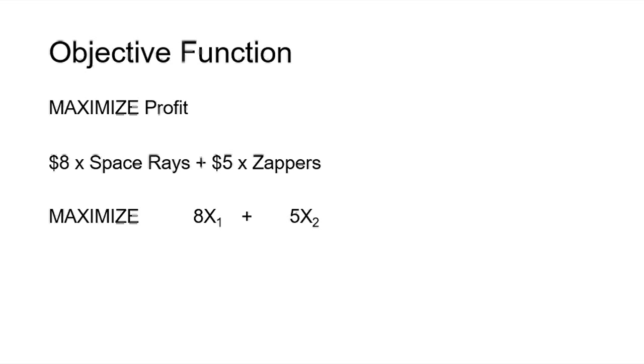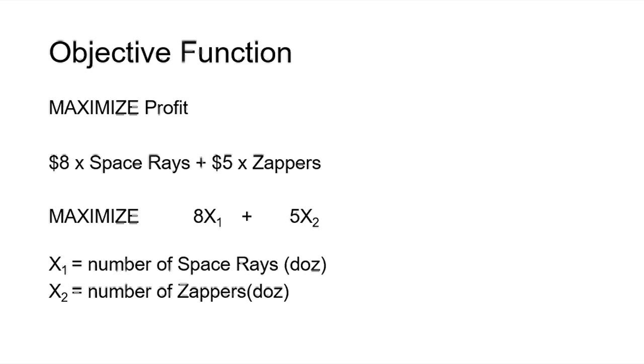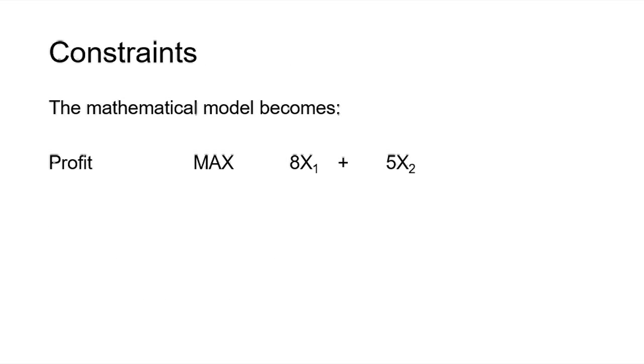So we've got maximize 8x₁ plus 5x₂. This is the line we place at the top of the table as profit and it's normally the overriding function we want to maximize. Max 8x₁ plus 5x₂.